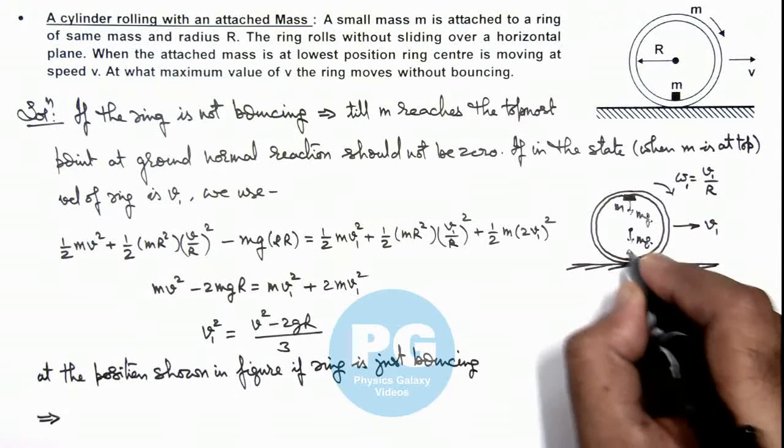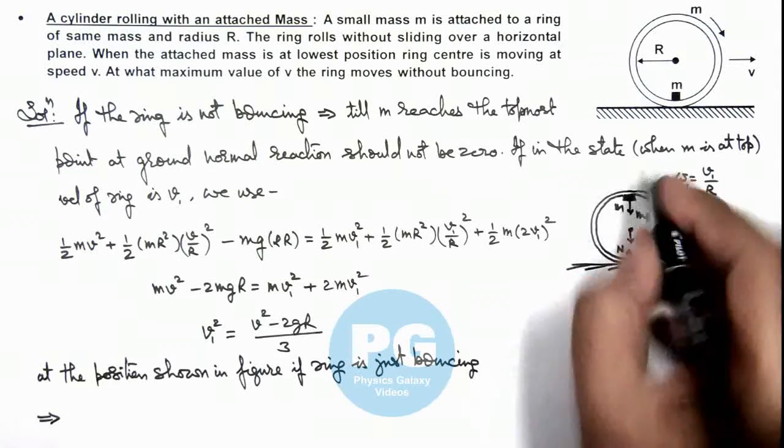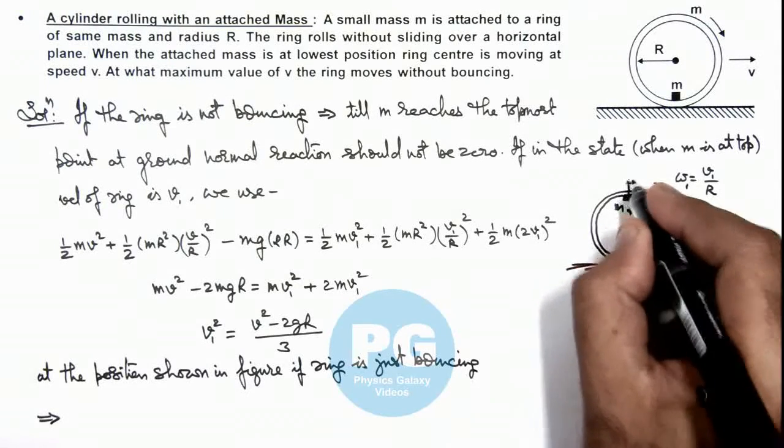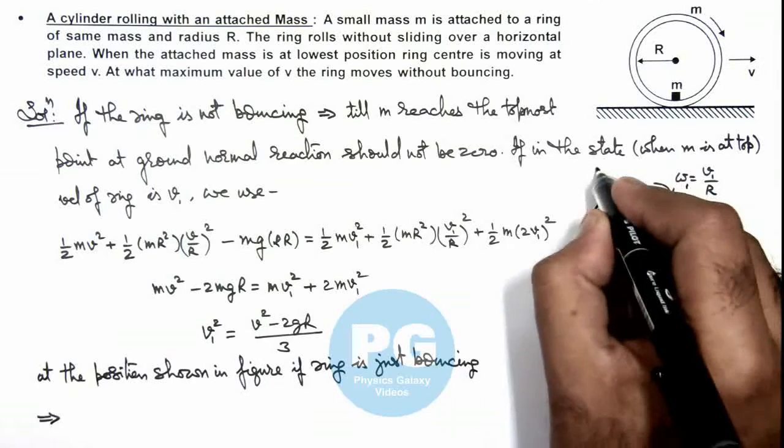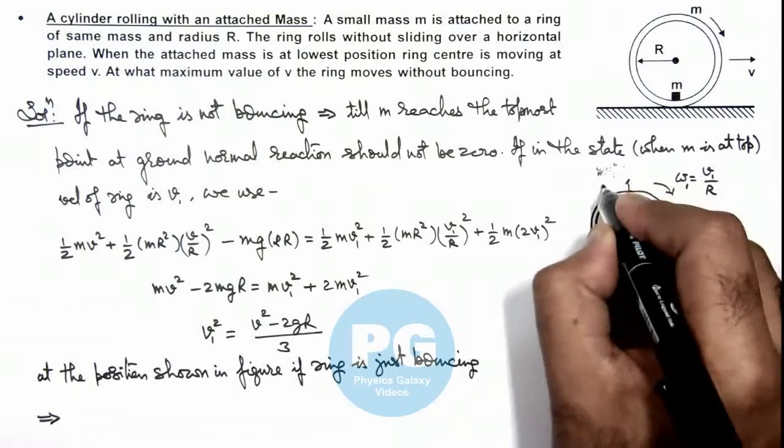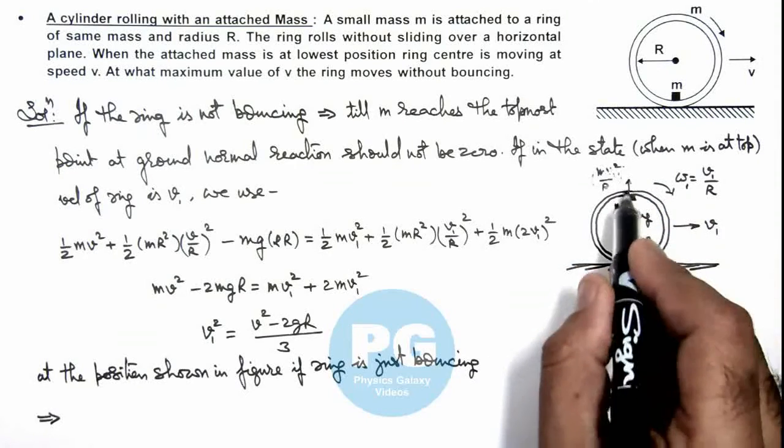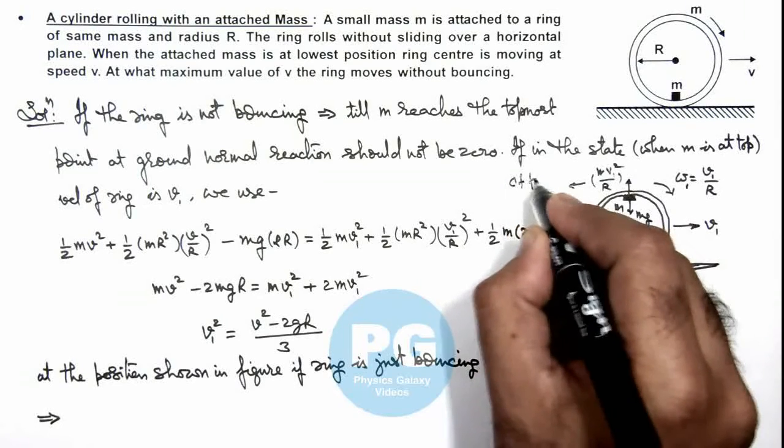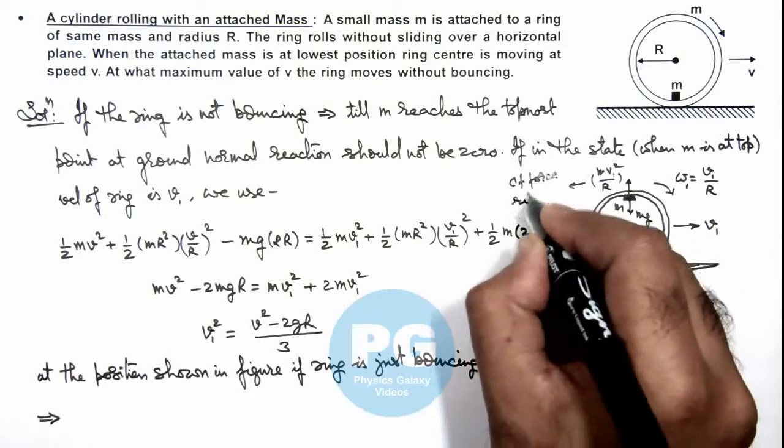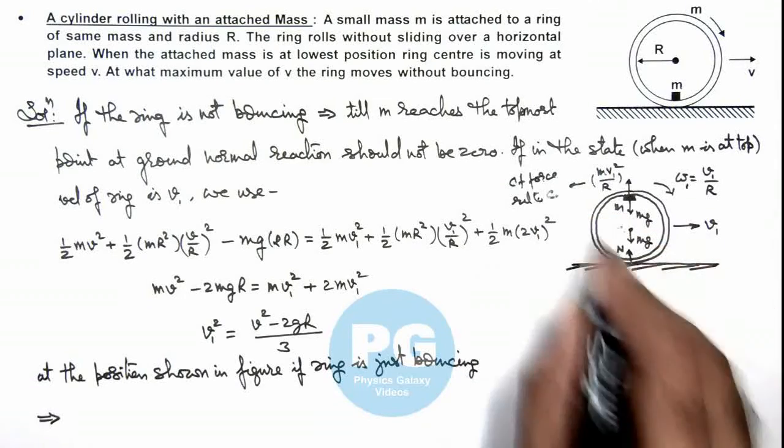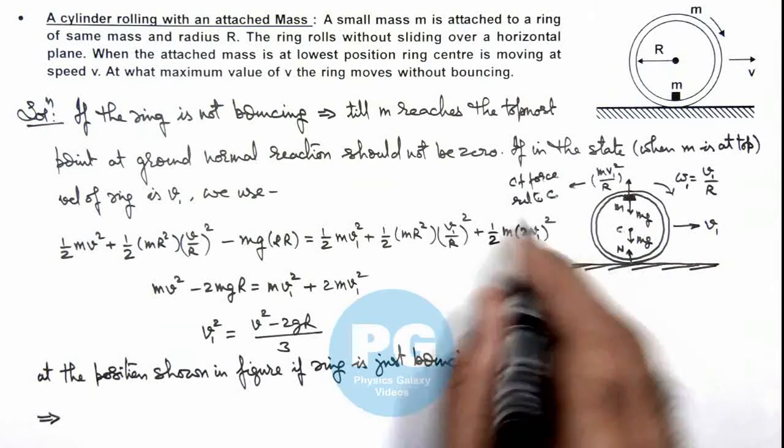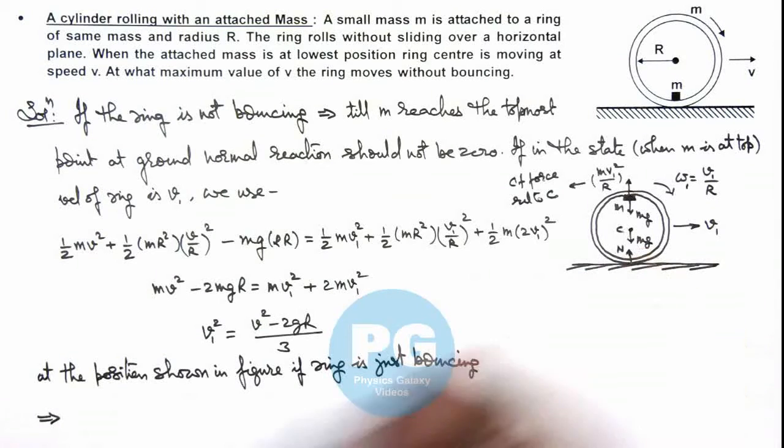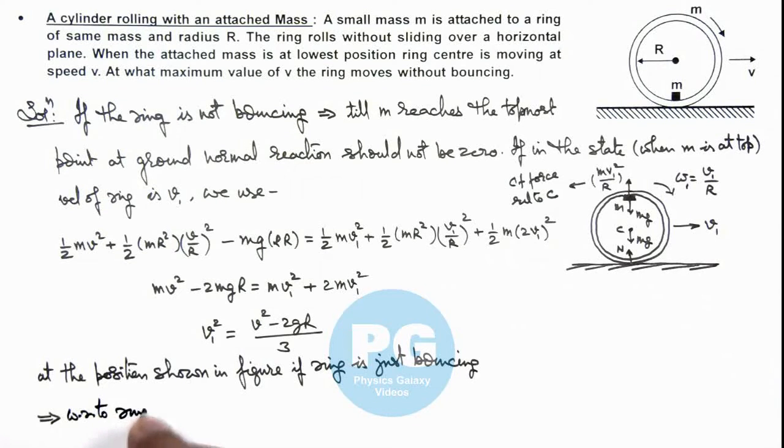This m will be experiencing a centrifugal force with respect to center, that is m v1 square by R. Here we are drawing this force, centrifugal force, relative to C where C is the center of this ring. At the position shown in figure, with respect to ring center, here we can write.